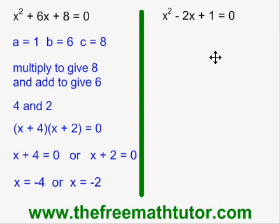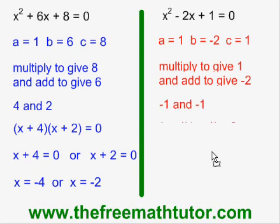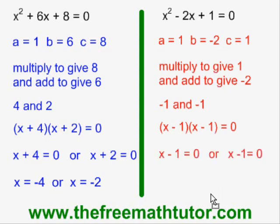In the example on the right, I define my a, b, and c, and I ask the question: what two numbers multiply to give 1 and add to give −2? They are −1 and −1. I factor my expression and I get the same binomial repeated twice. Doing the split and making the binomials equal to 0 gives the same answer.